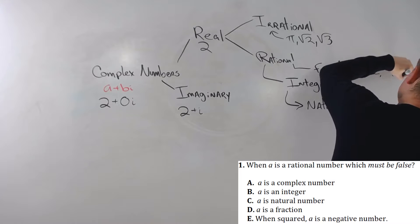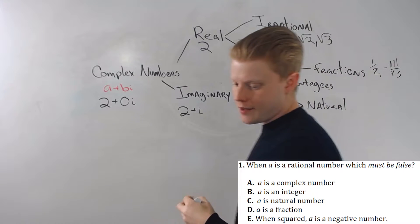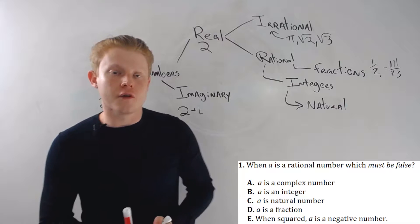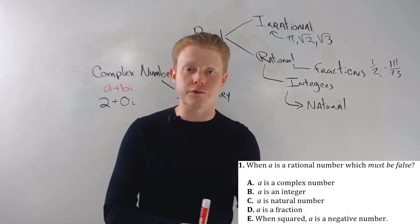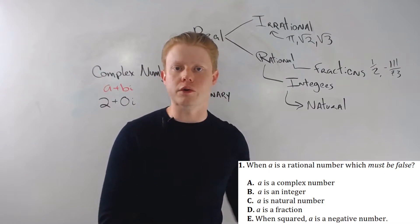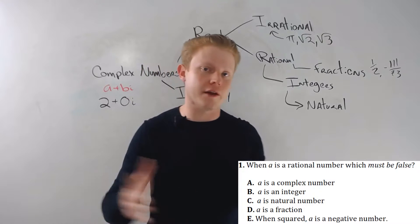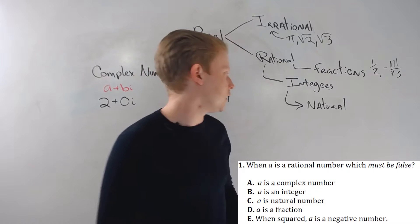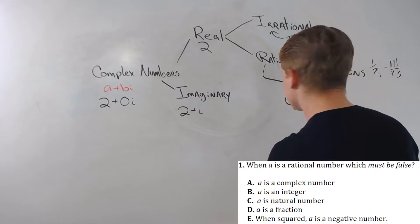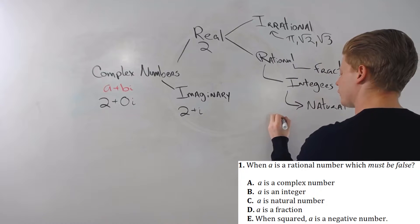Then we have integers — those are our whole numbers from negative infinity to positive infinity: zero, negative 27, positive 63, and everything else. And then our natural numbers — that's trick number two.